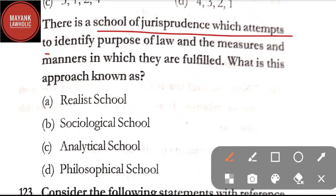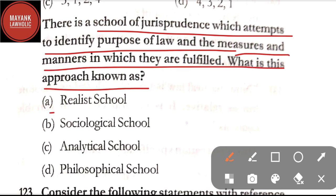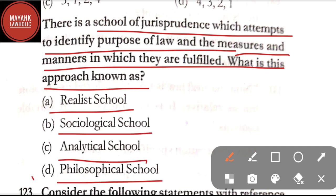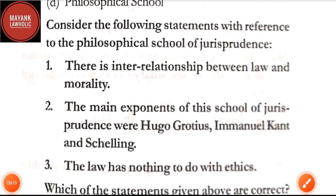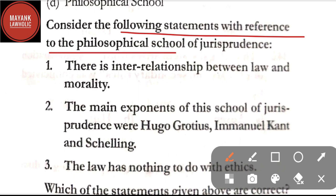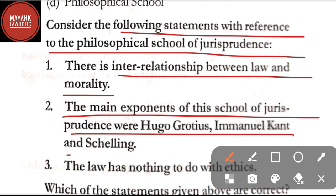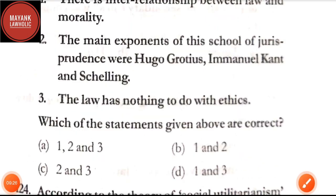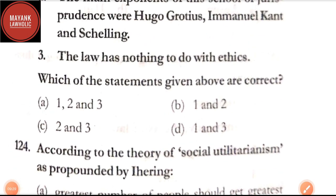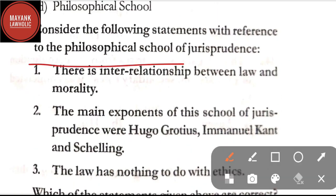Question number 122: there is a school of jurisprudence which attempts to identify the purpose of law and the measures and manners in which they are fulfilled — what is this approach known as — option A: realist school; option B: sociological school; option C: analytical school; option D: philosophical school. The correct answer is option D, philosophical school. Question number 123: consider the following statements with reference to the philosophical school — there is interrelationship between law and morality; the main exponents were Hugo Grotius, Emmanuel Kant, and Schelling; option C: the law has nothing to do with ethics. The correct answer is option B — statements one and two are correct.